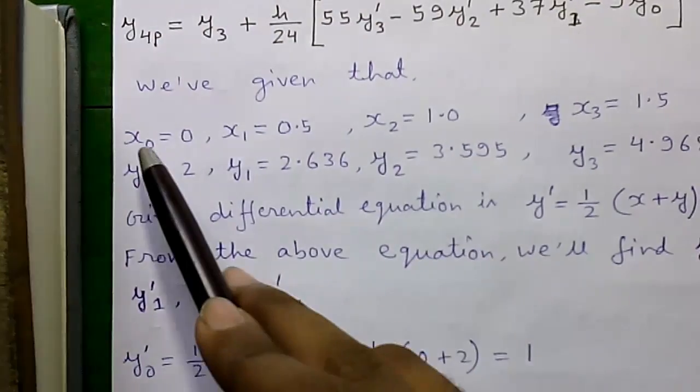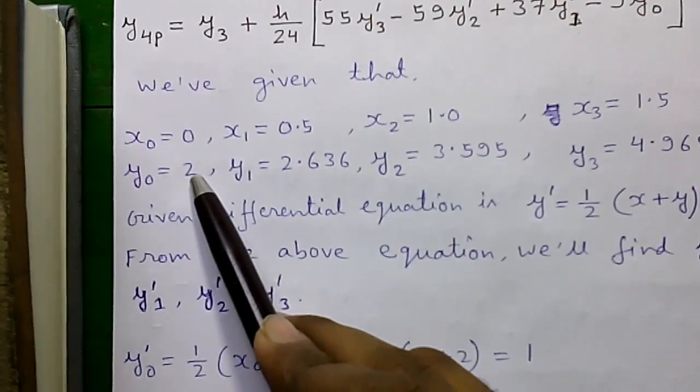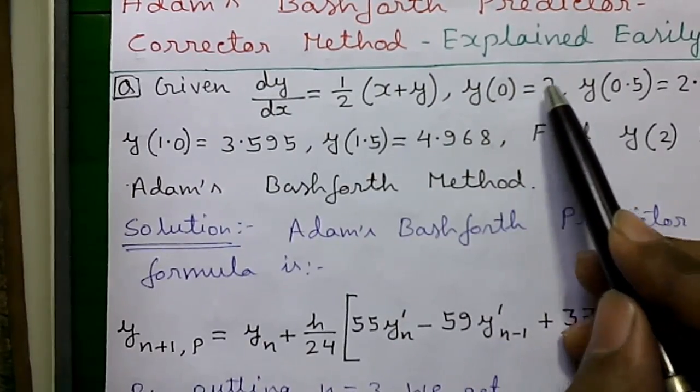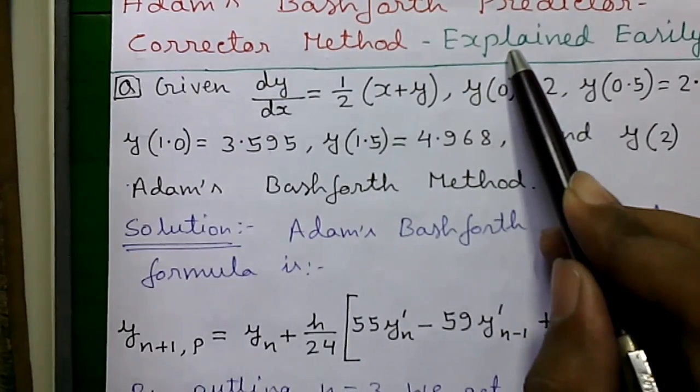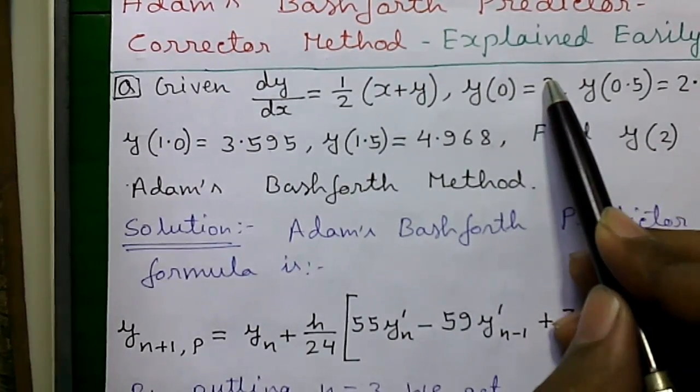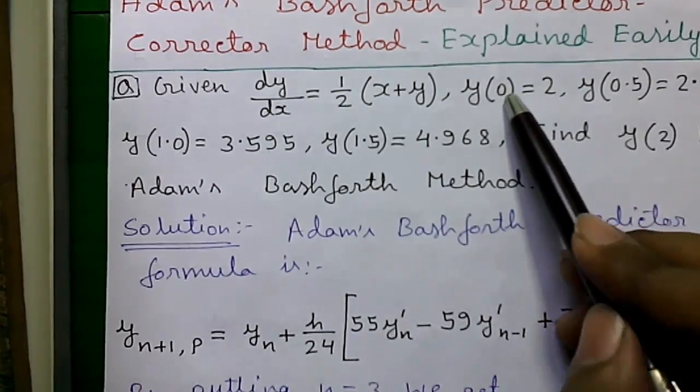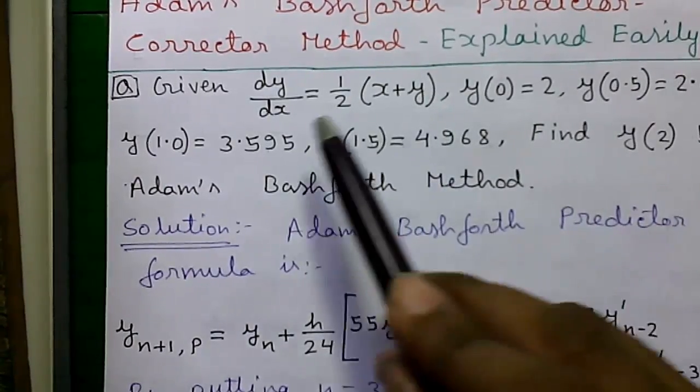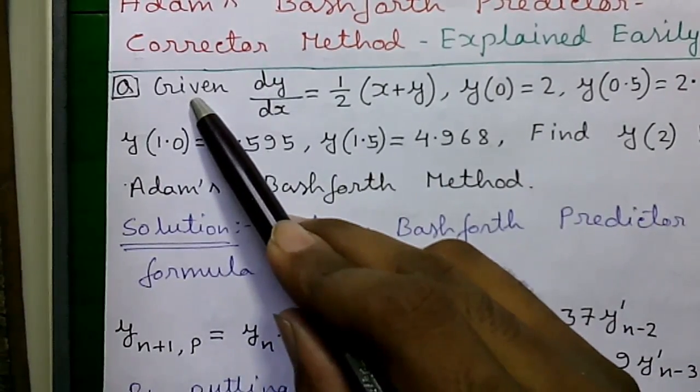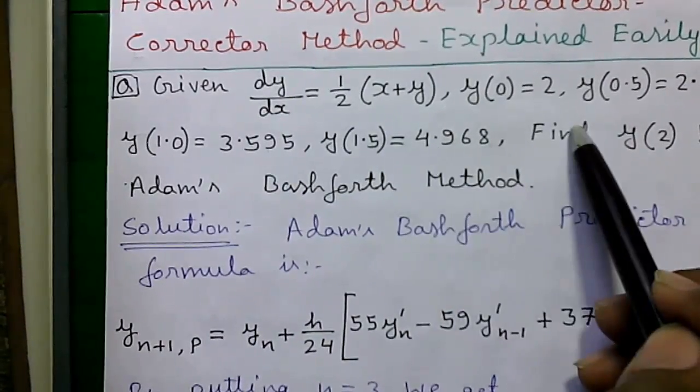Next we have given that x 0 equals to 0 and y 0 equals to 2. Here the value inside the bracket represents the x 0 value and the value at the right hand side represents the y 0 value. For next term it will be x1 value, y1 value. Similarly, x2 value, y2 value, x3 value and y3 value and so on.